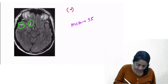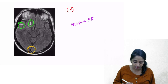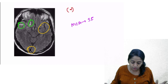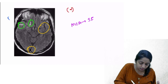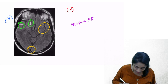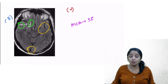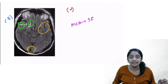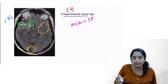For example, look at the superior sagittal sinus — it is black. Then look at the contralateral sylvian fissure — you don't see any hyperintense structures. But on the affected side, you can spot a hyperintense vessel within the sylvian fissure. This is known as the hyperintense vessel sign.